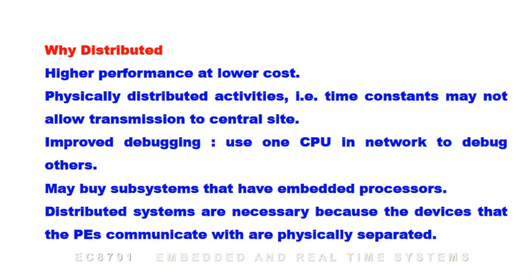Why distributed? Higher performance at lower cost. Physically distributed activities — time constraints may not allow transmission to a central site. Improved debugging: use one CPU in the network to debug others. May involve subsystems that have embedded processors. Distributed systems are necessary because the devices that the processing elements communicate with are physically separated.